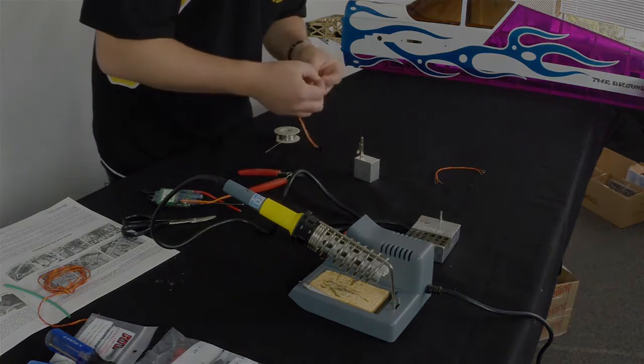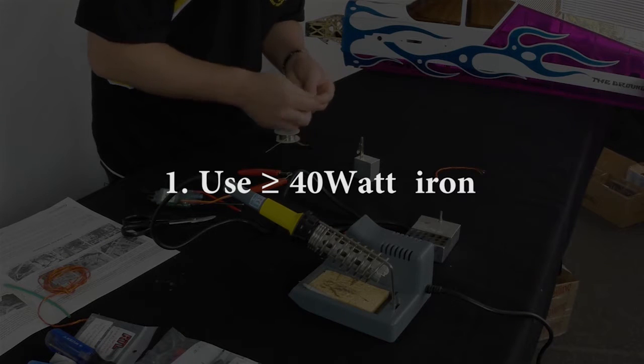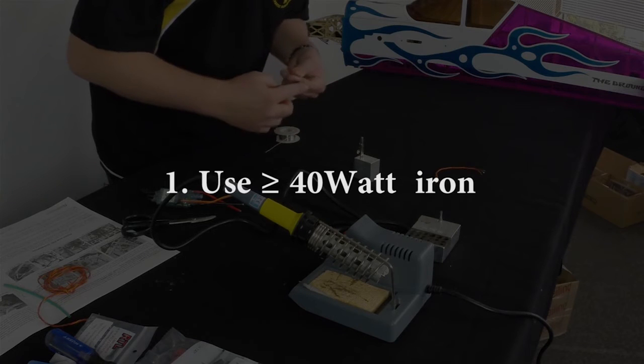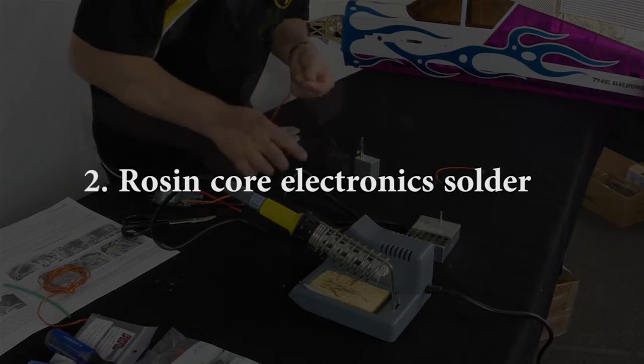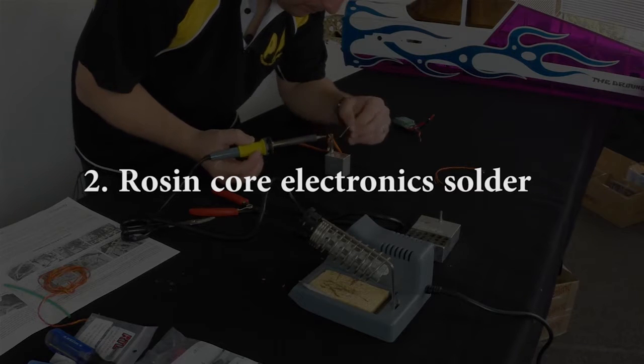The best pieces of advice I can offer for soldering RC components is to, one, have a powerful iron. A 40 watt unit is the smallest I would ever recommend and I use a 60 watt unit with a base that allows me to adjust the heat level. Two, use a high quality rosin core solder that's sold specifically for electronics use.